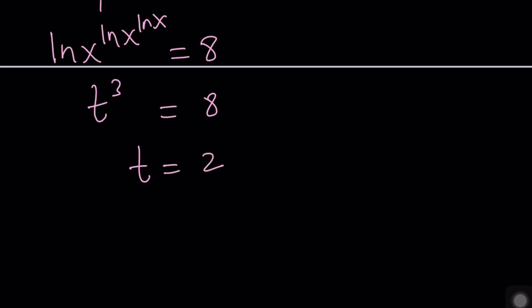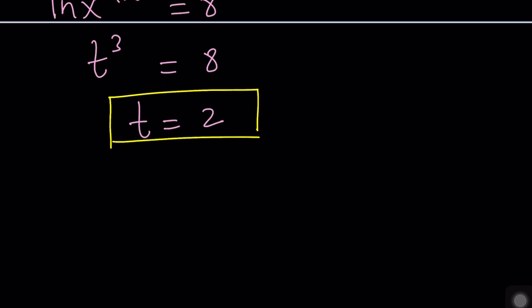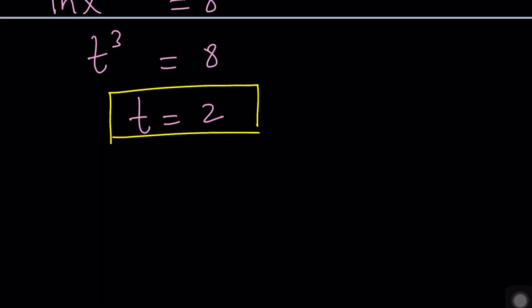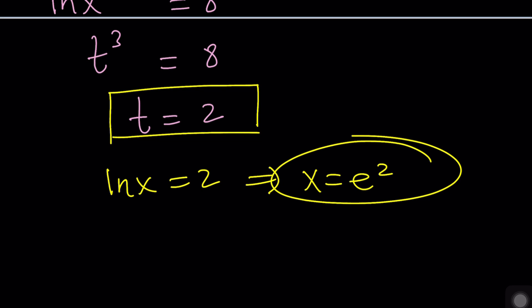By the way, we can also talk about complex values if you want. So, t equals 2 doesn't give us the solution directly, because we are looking for x. If t is 2, ln(x) is t. So, ln(x) equals 2. And this means x equals e squared. Nice. That's the solution. Is that the only solution? That's a good question. Let's go ahead and take a look at the second method.